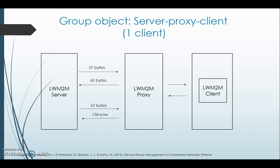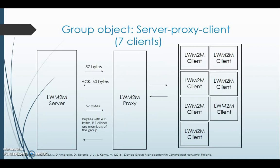We now consider the case with seven clients in a group. The LWM2M server sends a request to the proxy of 57 bytes and the proxy replies with an acknowledgement of 60 bytes. The proxy gains the values from the various clients and caches them for future use. When the LWM2M server then sends a request to the proxy of 57 bytes, the proxy replies with 405 bytes because seven clients are members of the group.